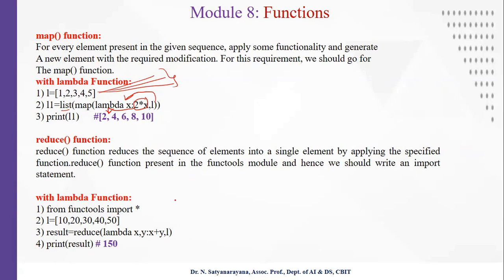The reduce method works similarly, but it is not a built-in function — you need to import it from the functools module. What reduce does is perform aggregate operations using the lambda function. For example, supplying a list and an expression that sums all elements: the lambda takes two arguments and adds them, returning an aggregate value for the entire list. Here, the sum of the list elements is 150, so you get 150. Lambda functions are most useful with filter, map, and reduce methods rather than being used on their own.